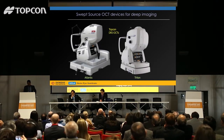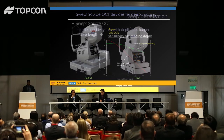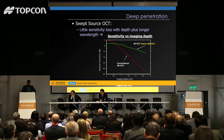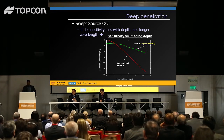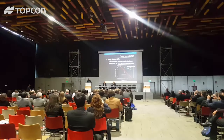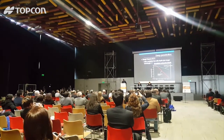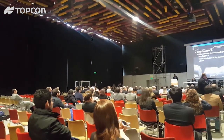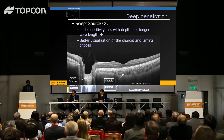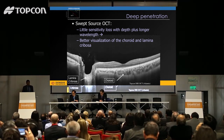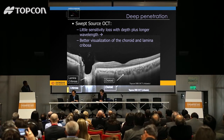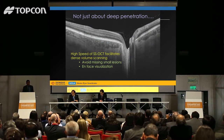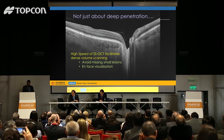Why has swept source OCT transformed our evaluation of the optic nerve and choroid? Professor Spade described this very beautifully — what most of us believe is the most important advantage of swept source OCT is the lack, or at least lesser, loss of sensitivity with depth, as well as the fact that it uses a longer wavelength giving deeper penetration. That's obviously a very powerful advantage for evaluating the choroid and also the lamina cribrosa of the optic nerve. There are also other advantages beyond deeper penetration — with swept source OCT devices we achieve higher speed.